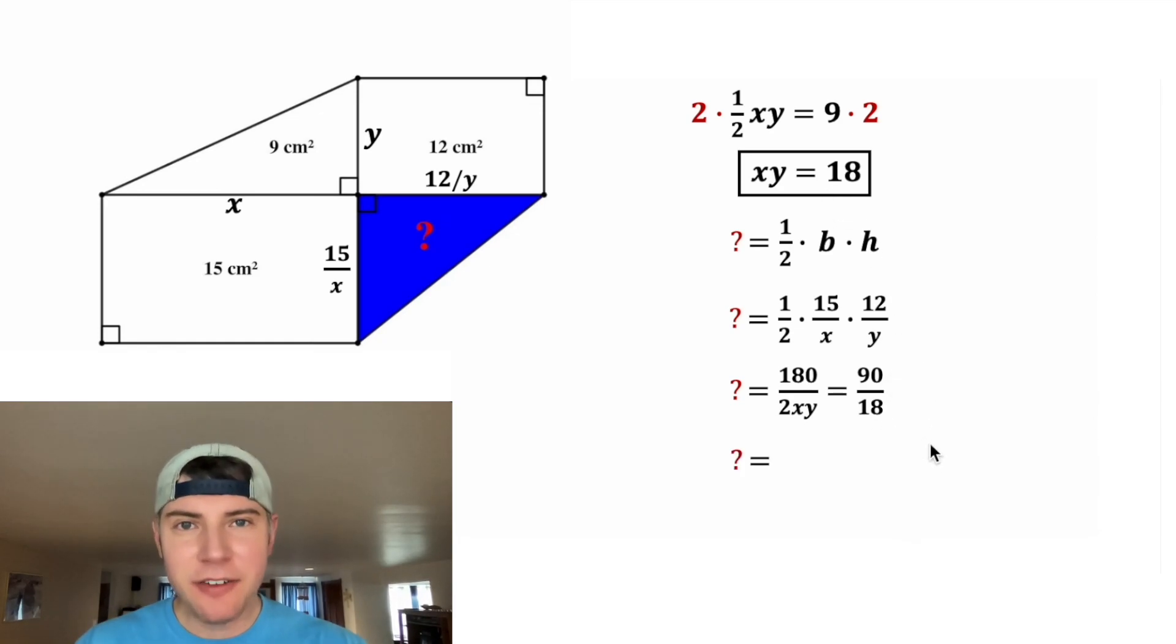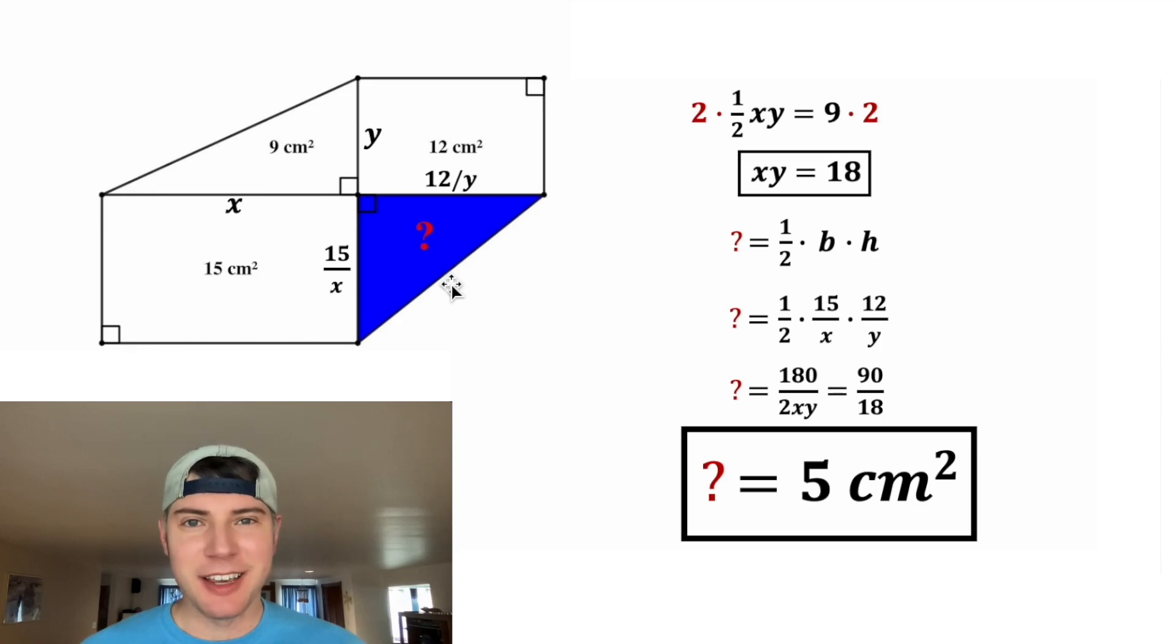And then 90 divided by 18 is equal to 5, and it's going to be centimeters squared. And that's the answer to our question. The area of this blue triangle is equal to 5 centimeters squared. Let's make it bigger and put a box around it. How exciting.